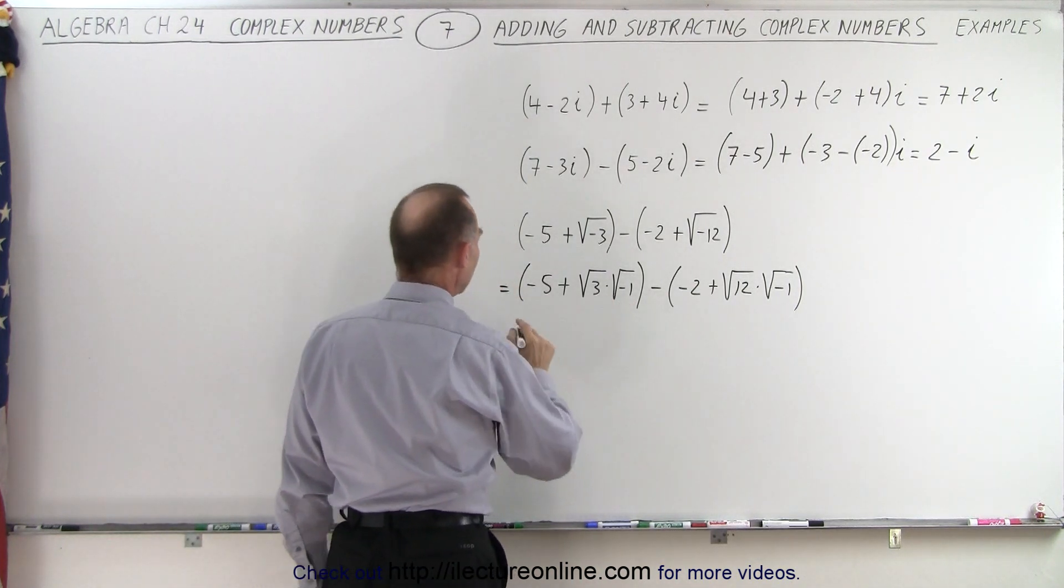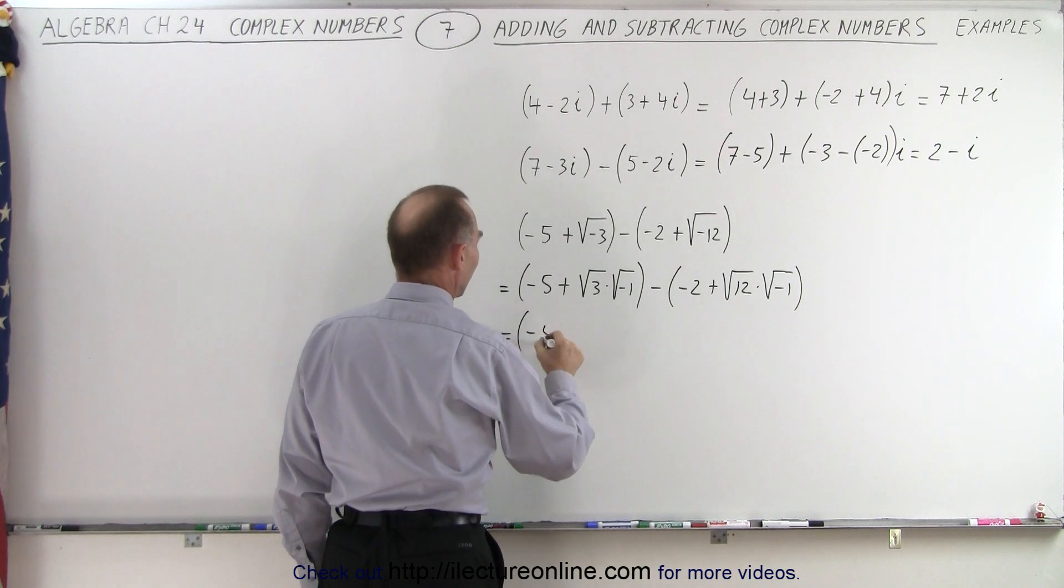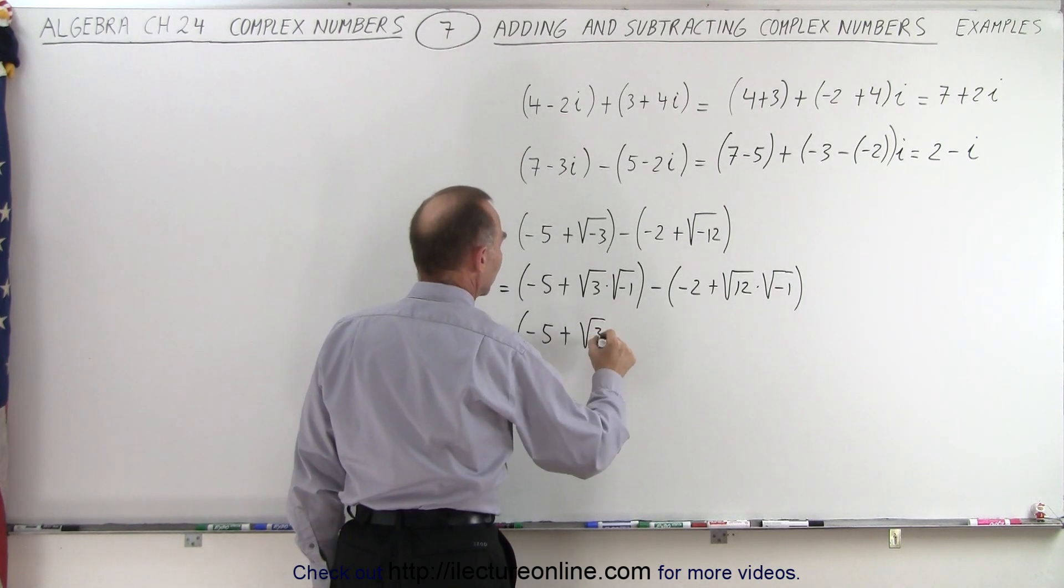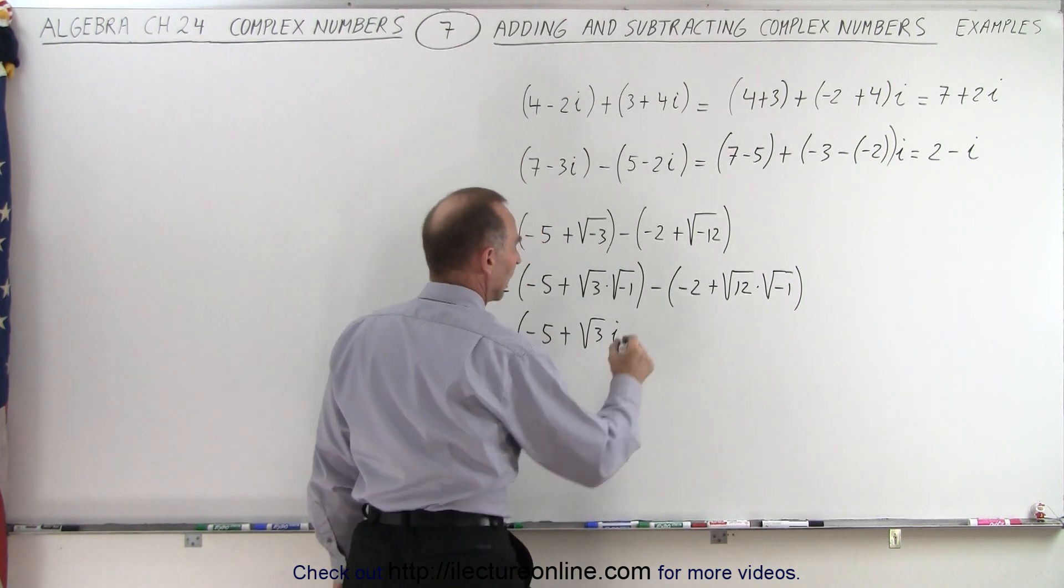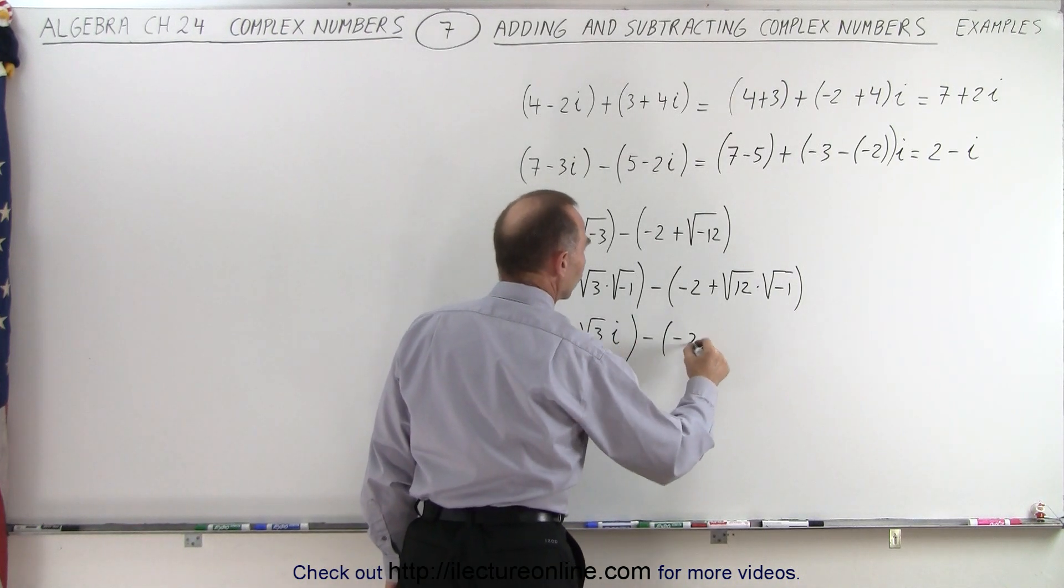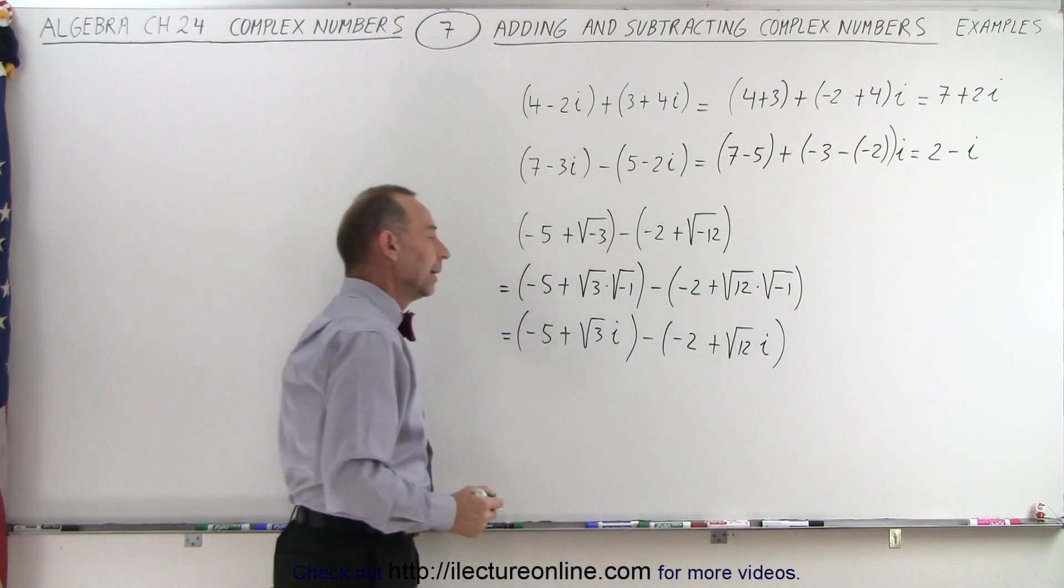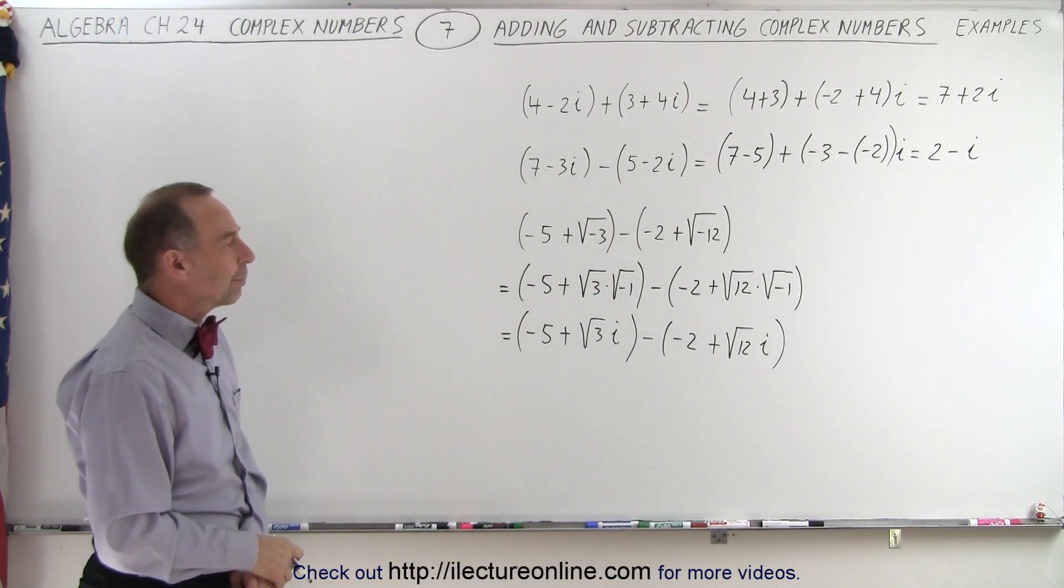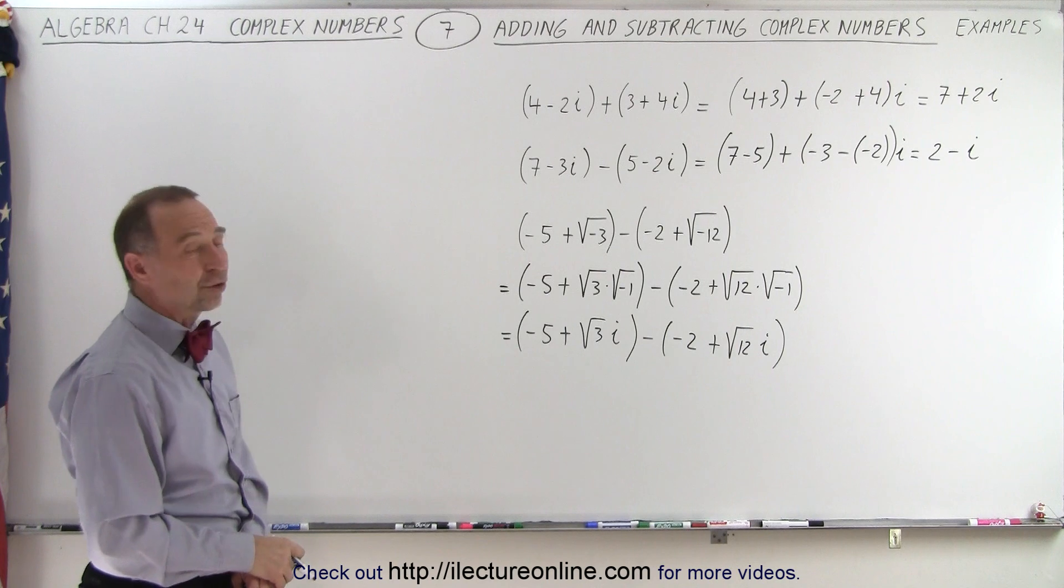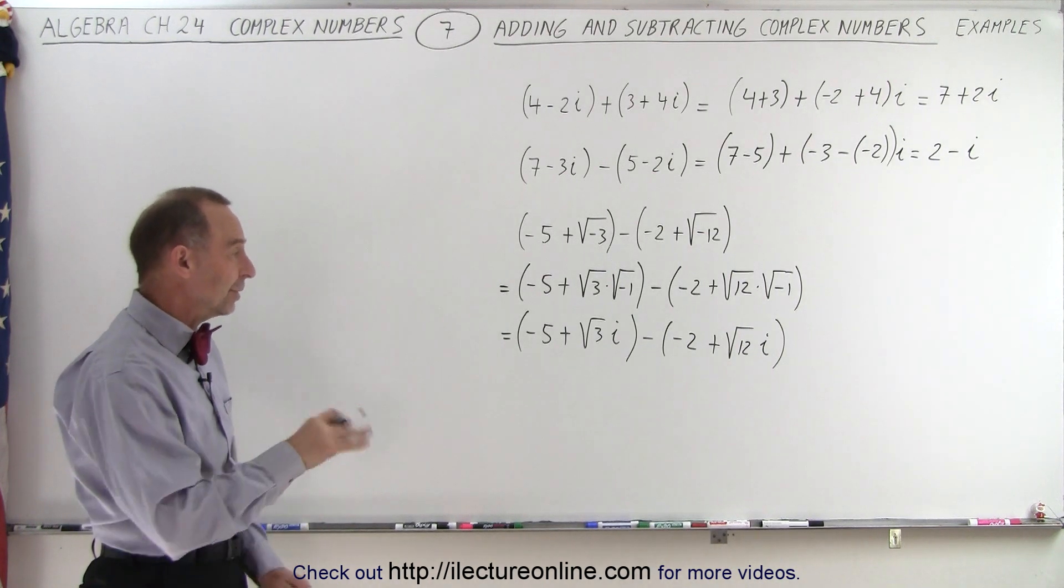So now we can turn this into an i. So this becomes negative 5 plus the square root of 3 times i. And this is minus minus 2 plus the square root of 12 times i. Of course, we can probably simplify the square root of 12, so let's do that.